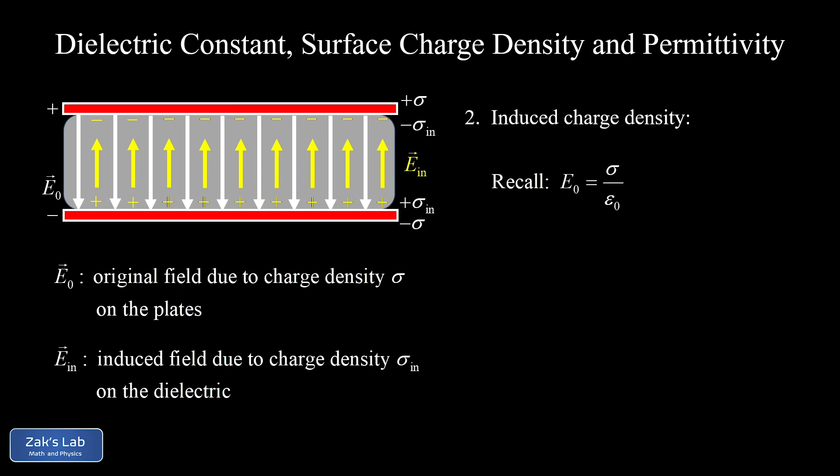We have a reminder of how to calculate the electric field inside a parallel plate capacitor when you know the surface charge density — this result came from applying Gauss's law: E0 equals sigma over epsilon_0, where epsilon_0 is the permittivity of free space. We can extend this result to the electric field generated by the induced charge separation on the dielectric — treating those induced charges on the dielectric slab as the plates of their own parallel plate capacitor and applying the same result from Gauss's law.